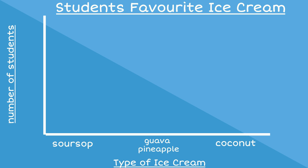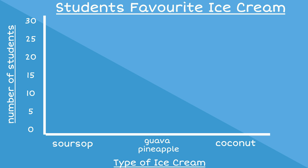Because Miss Roberts has a lot of children in her class, she does not want her bar graph to be too big. So she marks up the height of her bar graph in groups of five. Firstly, she checks to see how many children chose soursop — only five children chose soursop, so she draws her first bar to meet the number five on the vertical column. Next, she checks to see how many students chose Guava Pineapple Ice Cream. She sees that ten students chose this flavor, so she draws her second bar to meet the number ten on the vertical column.